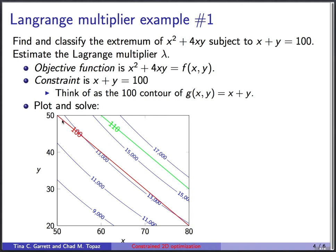So we can ask, is the highest value here? Well, the value of the function is a little bit less than 13,000. If I look here, it's equal to 13,000 because I'm crossing the 13,000 contour.